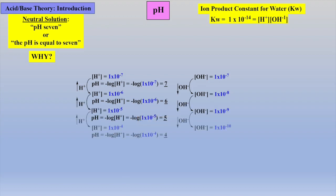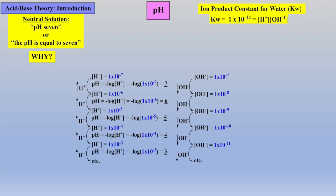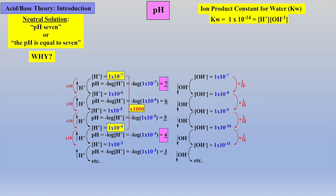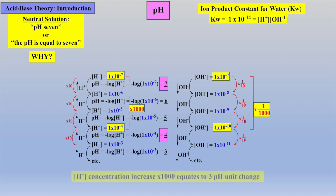Increasing this concentration by an order of magnitude each time drops the pH by 1 unit as shown. Thus, with each incremental move of 1 pH unit away from pH 7, we are increasing the concentration of protons by a factor of 10. For example, when comparing pH 7 to pH 4, the concentration of protons has increased three orders of magnitude, or a thousand times, and the hydroxide ion concentration has decreased three orders of magnitude. In other words, a change of three pH units equates to three orders of magnitude change in concentration.